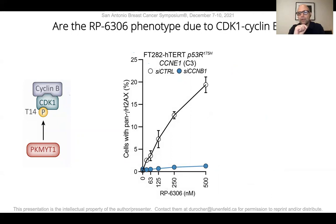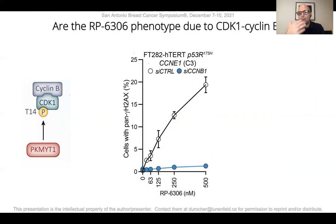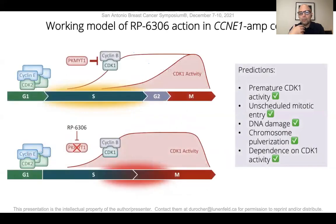Importantly, we tested whether this phenotype was dependent on CDK1 activity — a key prediction of our model. To do so, we dampened CDK1 activity by depleting cyclin B using siRNA, and in this condition we could completely abrogate DNA damage caused by PKMYT1 inhibition. In summary, our working model is that cyclin E-high cells have an increased dependence on PKMYT1-driven inhibition of CDK1 activity to prevent premature entry into mitosis, which would be accompanied by catastrophic DNA damage and cell death.